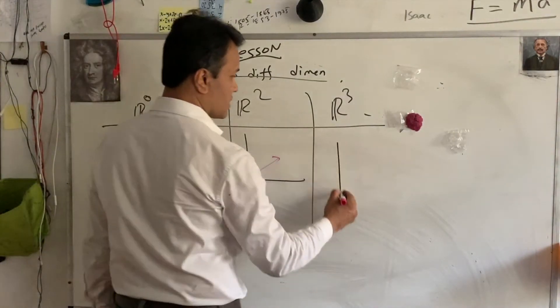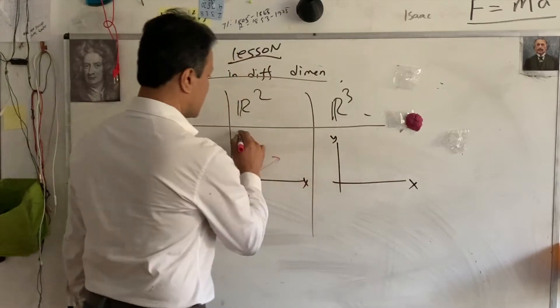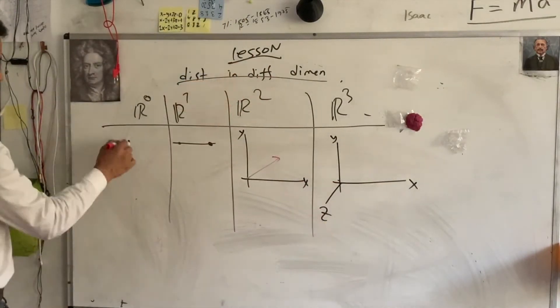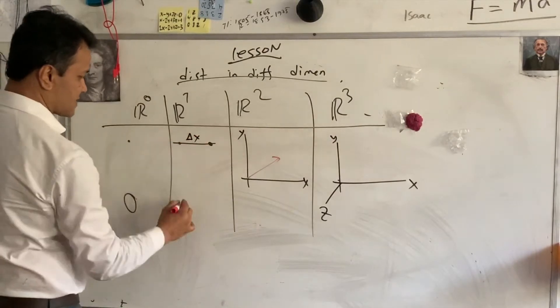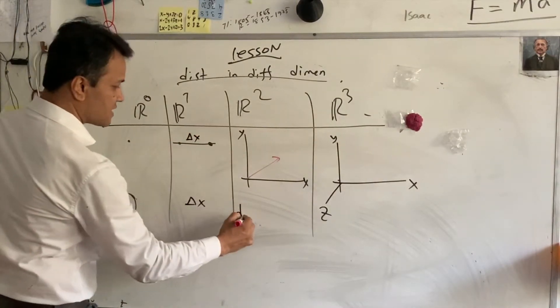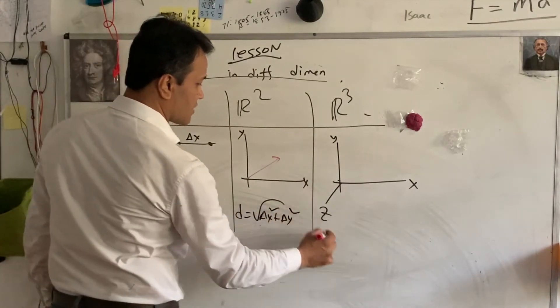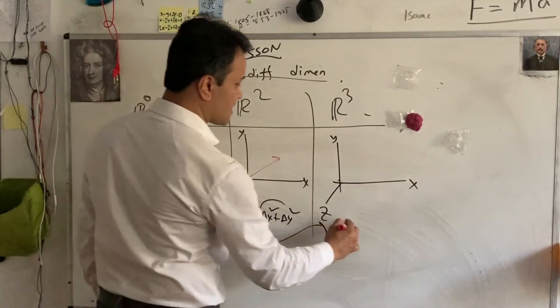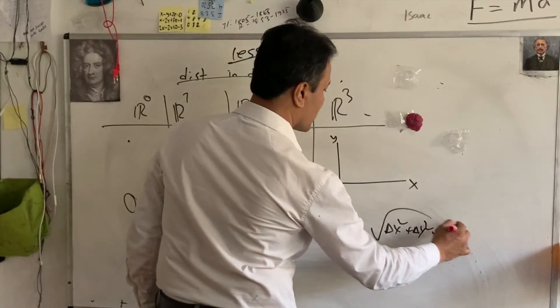And when we talk about three dimensions, we are talking about Cartesian plane, but you have a, what is the distance over here? Zero. What is the distance over here? Delta x. What is the distance over here? D is equal to delta x squared plus delta y squared. What is the distance over here? We can generalize this x squared plus y squared plus z squared.